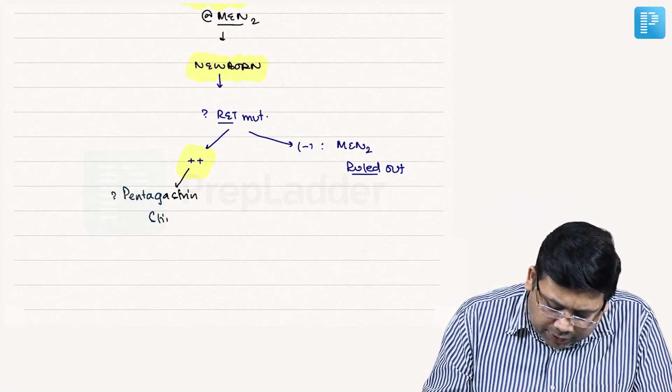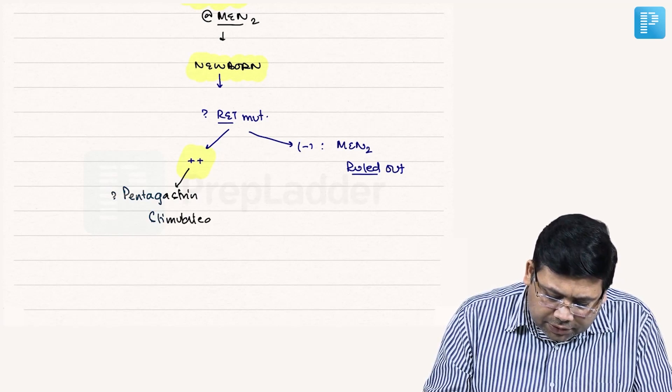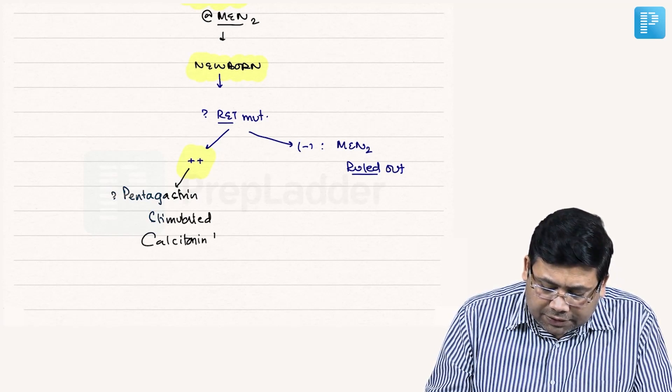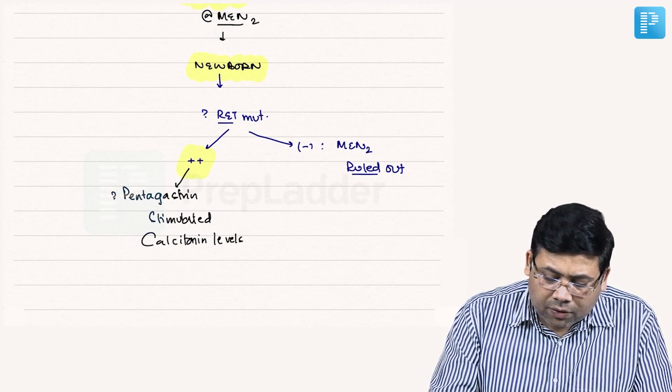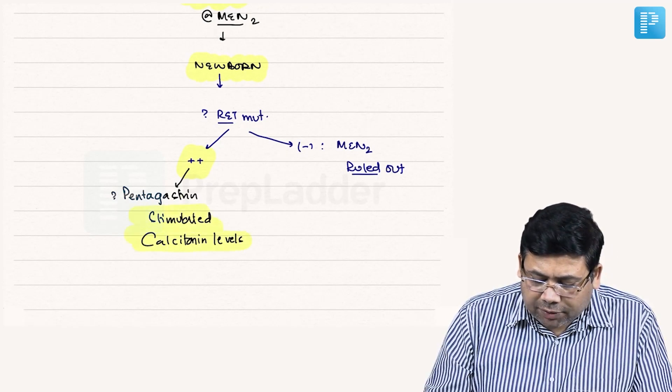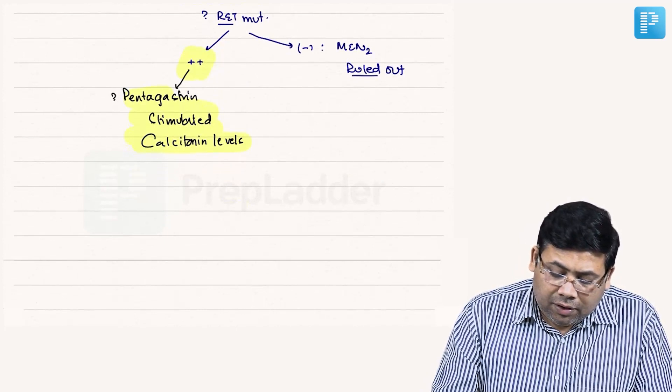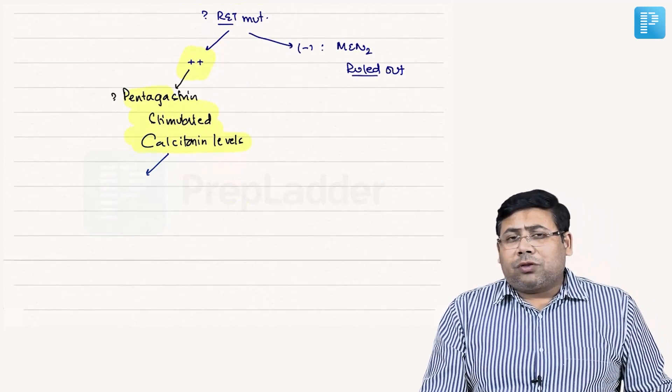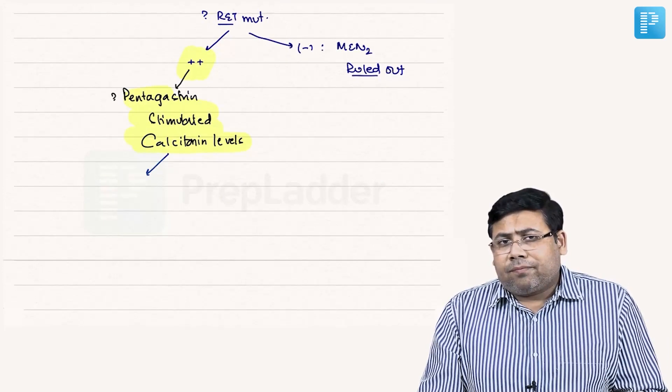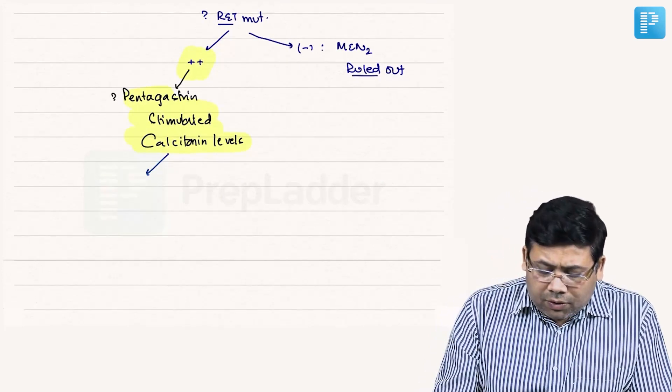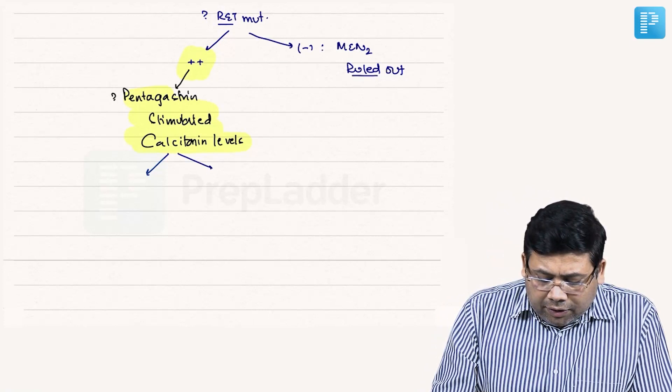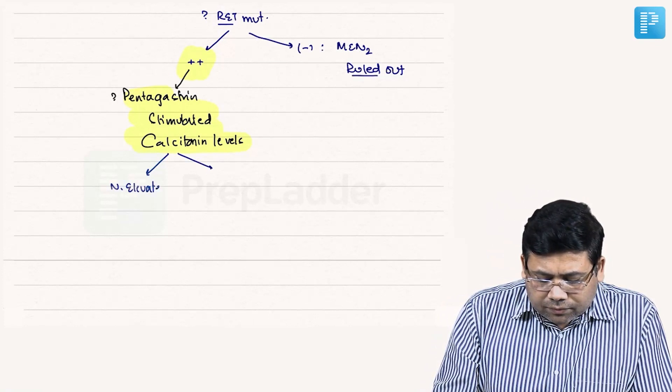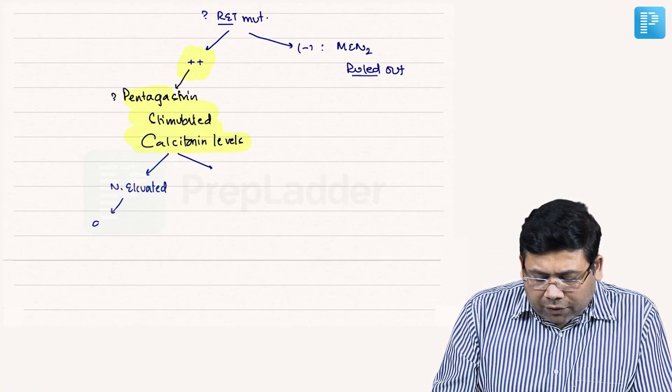Pentagastrin stimulated calcitonin levels. If RET proto-oncogene mutation is positive but calcitonin is not elevated, then you will have to go for annual follow-up.